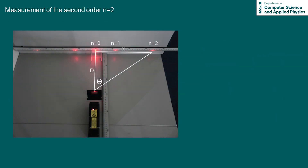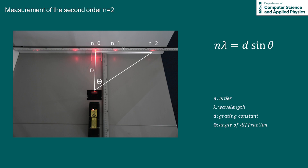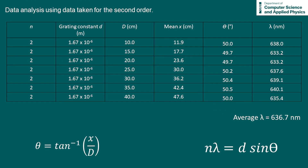During our experimental measurements, we could also have measured the distance from the zero order to the second order. Using the grating formula with n equals 2, our wavelength lambda equals d sin theta divided by 2. This table shows all the data recorded for the second order measurements, and the final values of lambda are similar to those from the first order. The average value of lambda was found to be 636.7 nm.